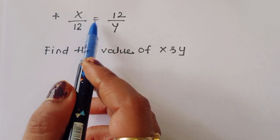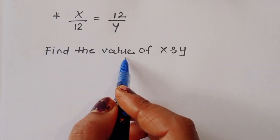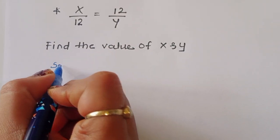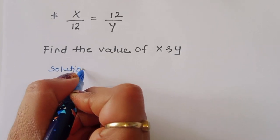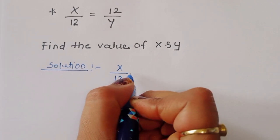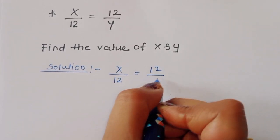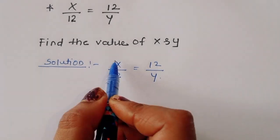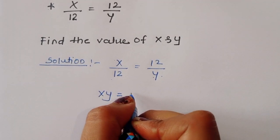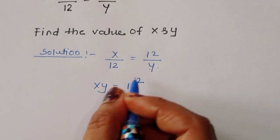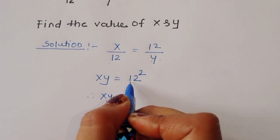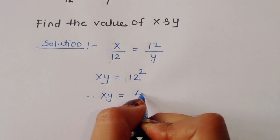Given x power 12 is equal to 12 power y, find the value of x and y. So x times y is equal to 12, and x times y squared is equal to 12 squared. Therefore x times y is equal to 4 times 3, since 4 threes are 12.